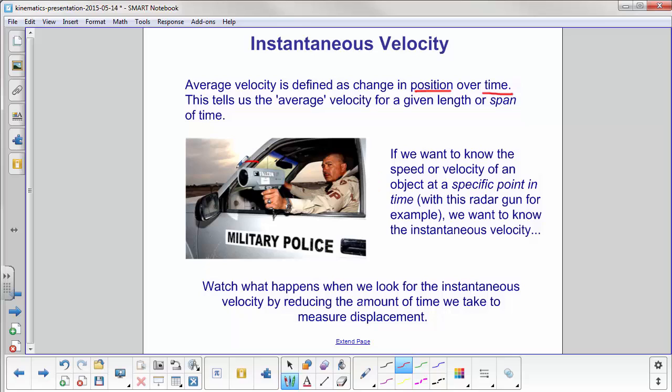For example, a radar gun will tell you what your velocity is at any point. We're looking for the instantaneous velocity. So let's take a few slides and see what happens when we look for the instantaneous velocity by shrinking the amount of time we take to measure displacement or how far we're going and in which direction.